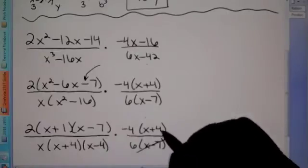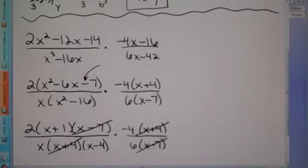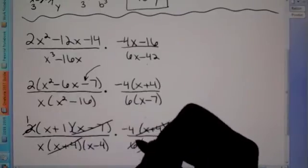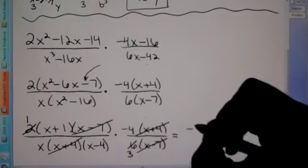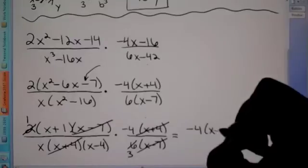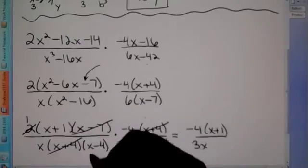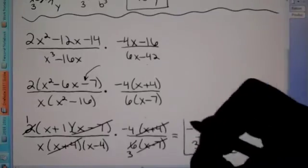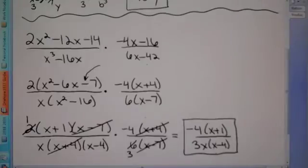I see X minus 7 on top and bottom — cancel those. I see X plus 4 on top and bottom — cancel those. Not only that, I have coefficients: 2 and 6. So 2 divided by 2 is 1, and 6 divided by 2 is 3. That's all we can reduce. On top I'm left with a negative 4 and an X plus 1; on the bottom I'm left with a 3, an X, and an X minus 4. We have nothing left to reduce. Do not cancel those X's because of the plus and minus — you can't reduce those. This would be your final simplified answer.